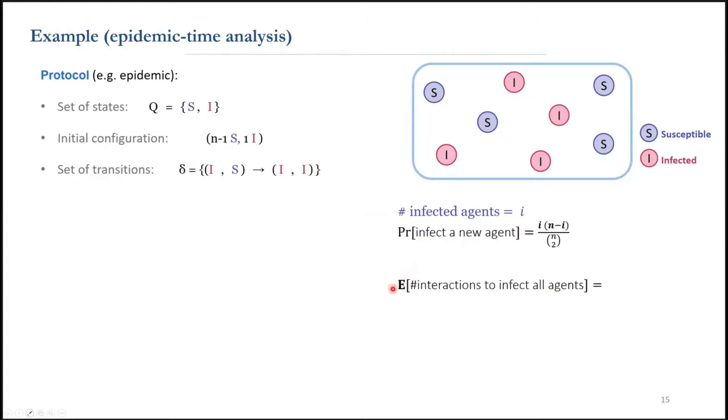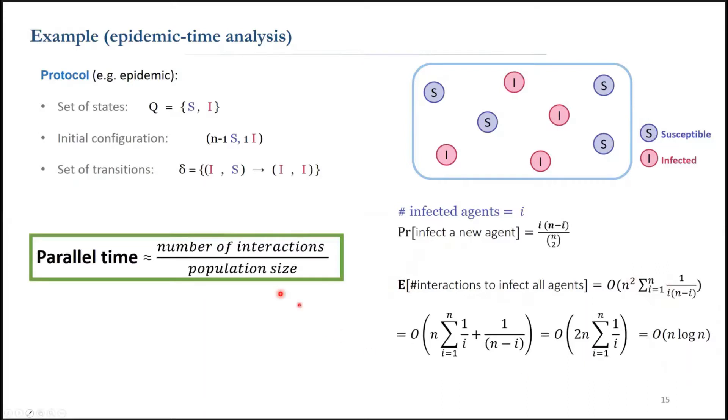And the expected value is the reciprocal of it. By taking a sum over all values of i, we can show that the expected number of interactions to infect all agents is n log n. But n log n is not the time complexity.